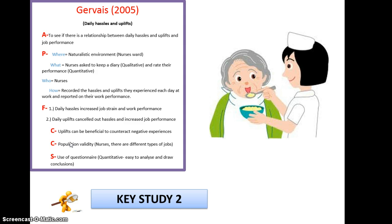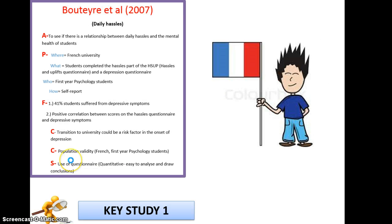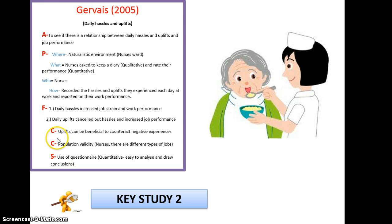They then correlated what nurses recorded in their diary with how well they felt they performed. The main finding was that the uplifts — for example a patient saying thank you or a patient's family giving them flowers — outweighed the hassles. The general conclusion is that in a workplace we must have a certain amount of uplifts, otherwise hassles will get to us and we won't perform as well. Again, the criticism is population validity — they're just nurses. The strength is the use of questionnaires, same as before, which means less for you to remember.